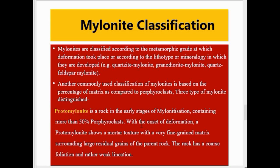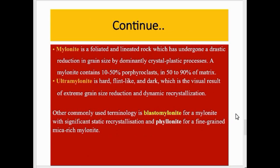On the basis of matrix percentage, there are three main types. The first is proto-mylonite, which is a rock in the early stage of mylonitization containing more than 50 percent porphyroclasts. With the onset of deformation, proto-mylonite shows a mortar texture with a very fine-grained matrix surrounding large residual grains of the parent rock. The rock has coarse foliation and rather weak lineation.